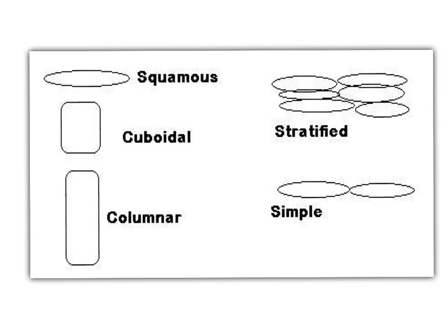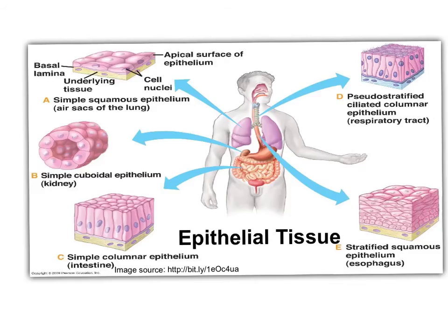The terms used to describe epithelial tissue include squamous, cuboidal, columnar, stratified, and simple. Stratified and simple explain the layers in the types of epithelial tissue. Simple squamous epithelium is found in the air sacs of the lung. It lines the chambers of the heart and helps us breathe in oxygen and out with carbon dioxide. It also lines the veins and arteries.